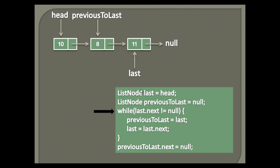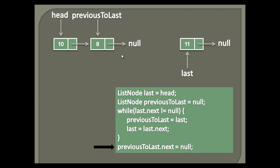Now again it checks for the while loop condition. Last node points to third node, whose next points to null. Thus, last's next is equal to null, so the while loop condition fails and the loop terminates. This signifies that last node has reached the last node of the linked list. In the final step, we have traversed to the node which is previous to last. We just update the next pointer of previous to last node to null — we simply disconnect the last node from the linked list — and return back the last node.